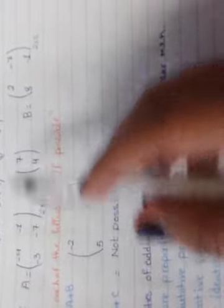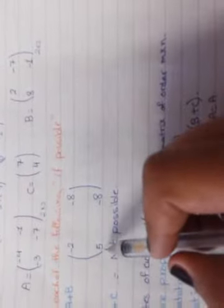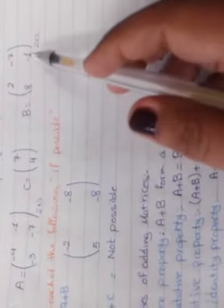Negative 4 plus 2, negative 2. Negative 1 plus negative 7, negative 8. Negative 3 plus 8 equals 5. Negative 7 plus negative 1 equals negative 8.